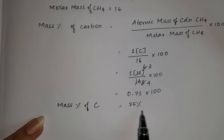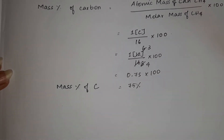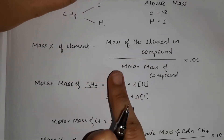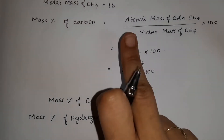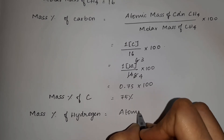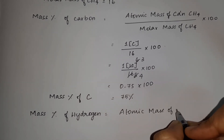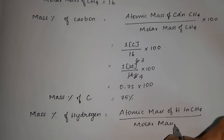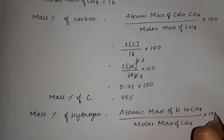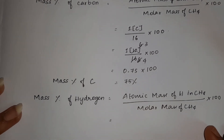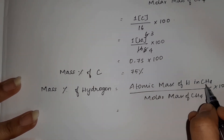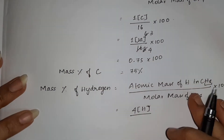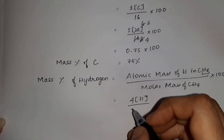Next, mass percentage of hydrogen is equal to mass of hydrogen divided by molar mass of CH4 into 100. First, hydrogen atomic mass in CH4 divided by molar mass of CH4 into 100. How much hydrogen atom is there in CH4? H4 — there are 4 hydrogen atoms. So 4 into H, divided by molar mass 16, into 100.